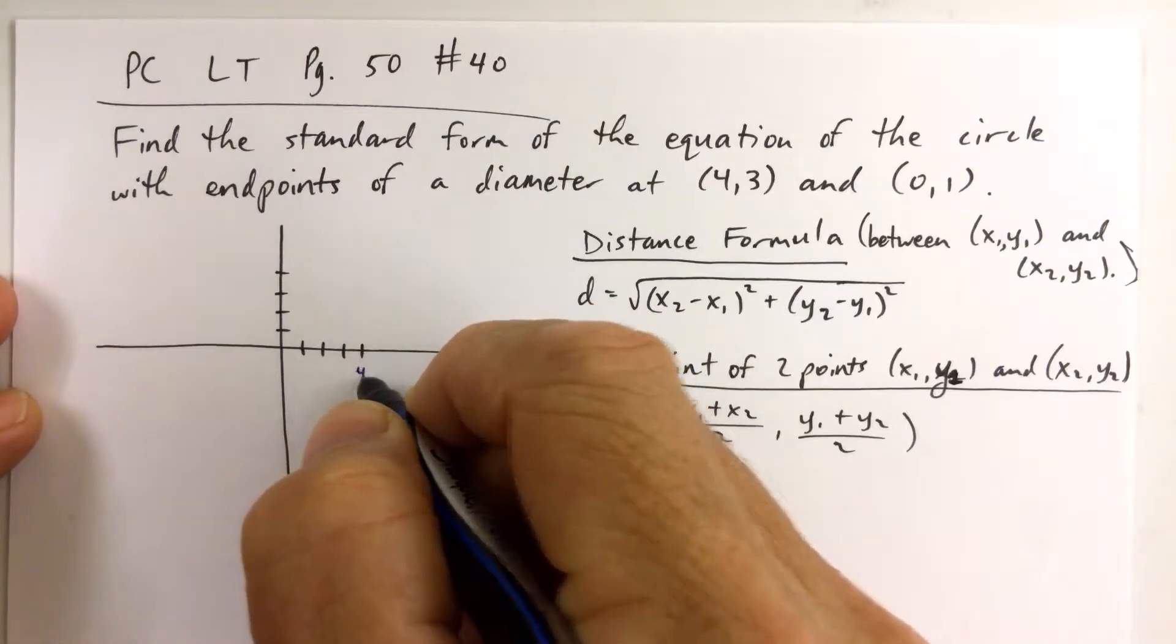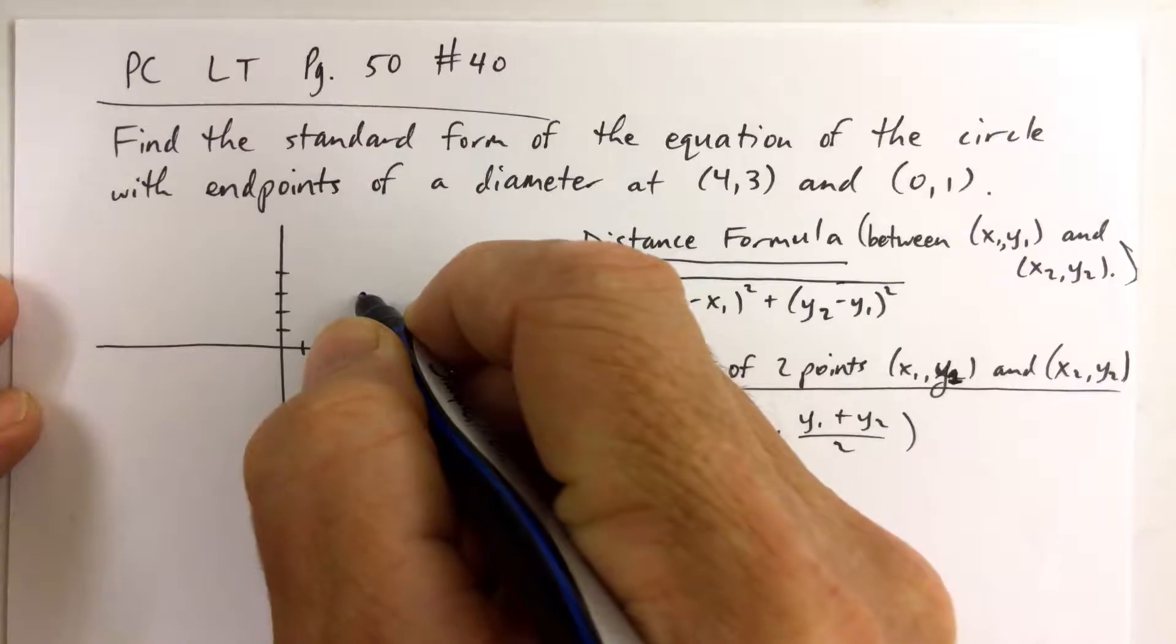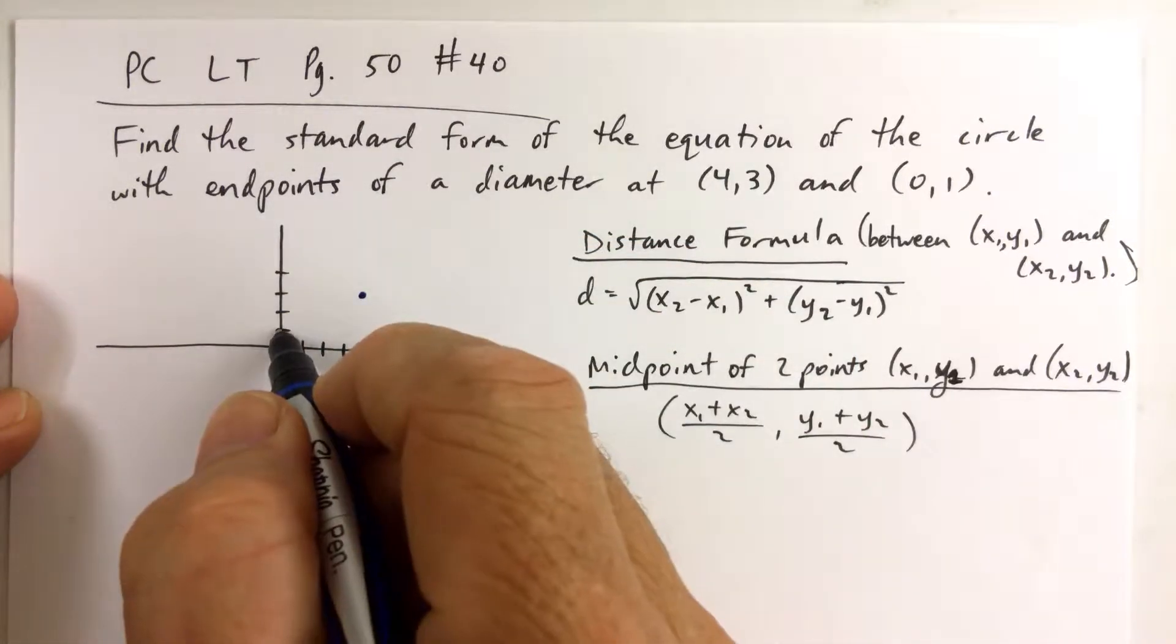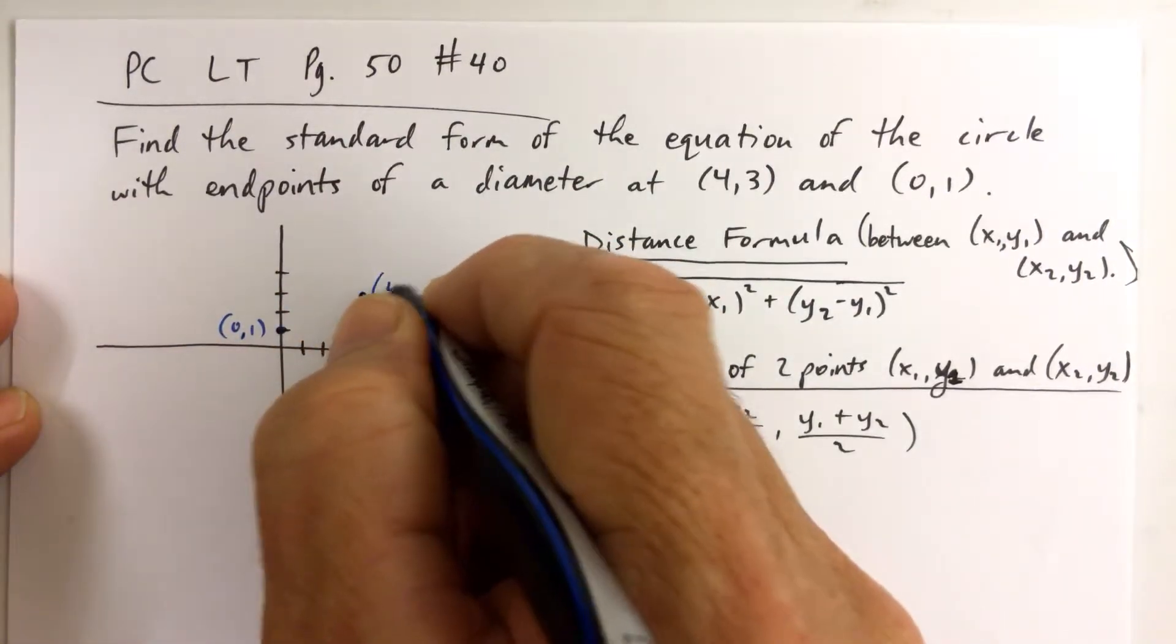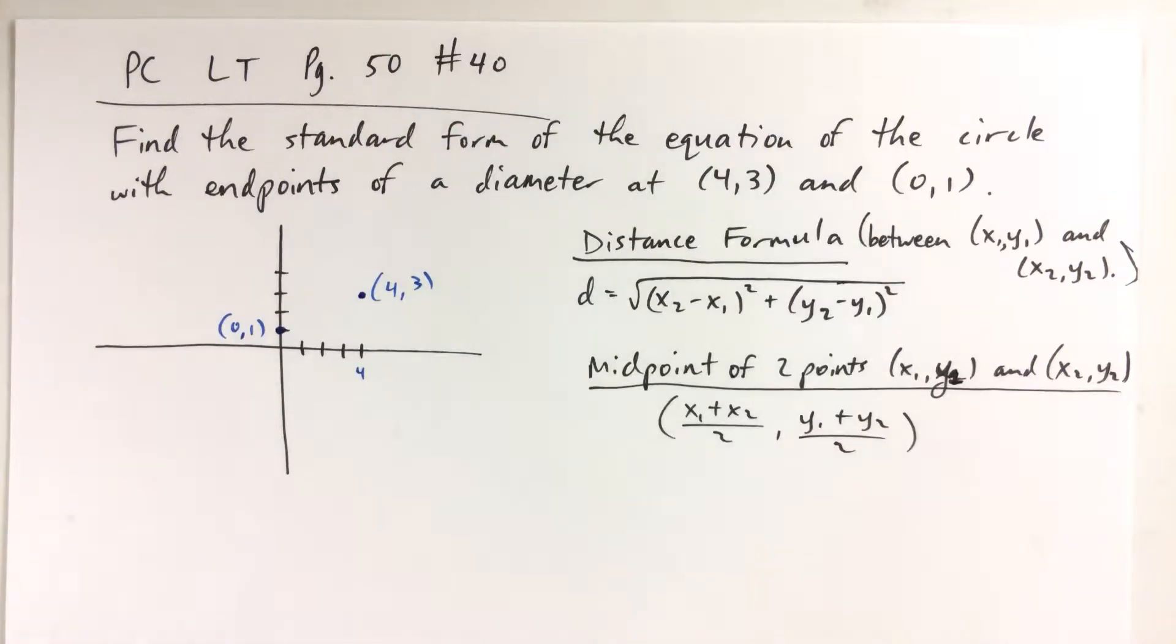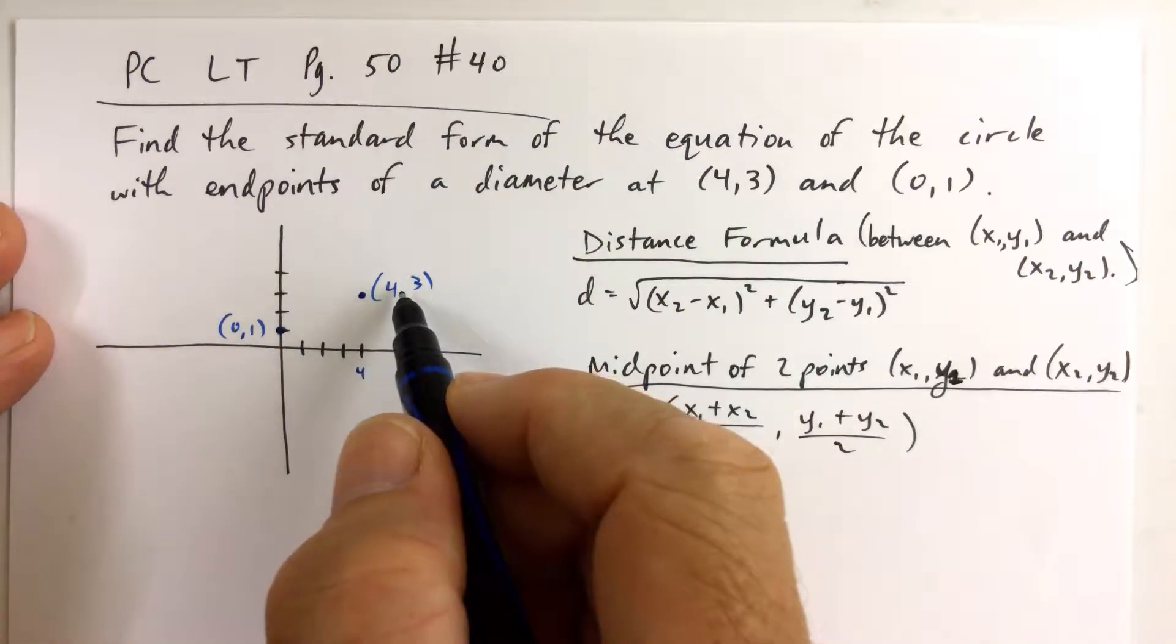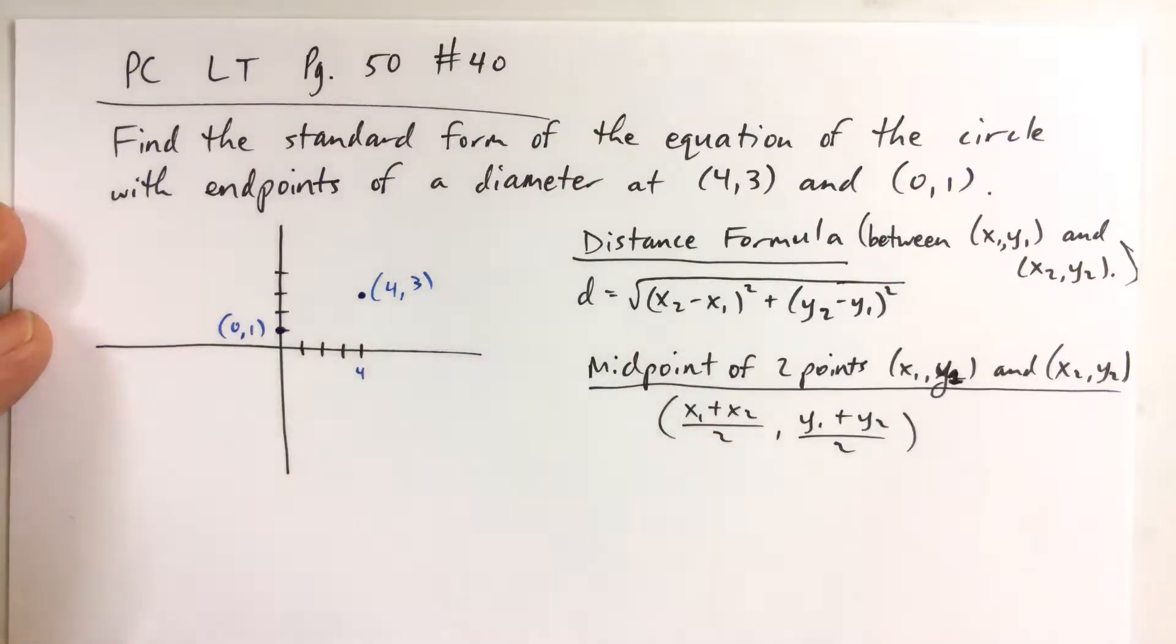Count over 4 and go up 3, so we put the end of one diameter there, and then we have (0,1). If we remember the distance formula and the midpoint formula, we can come up with a midpoint of these two points here, and that midpoint of the diameter would be the center of the circle.